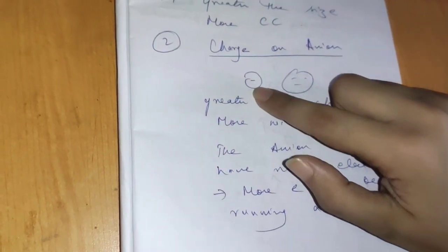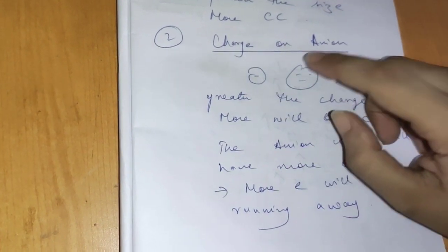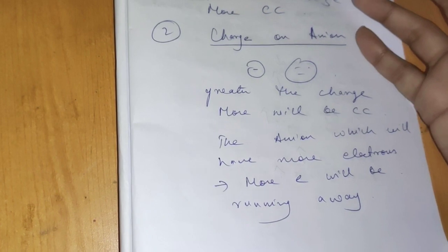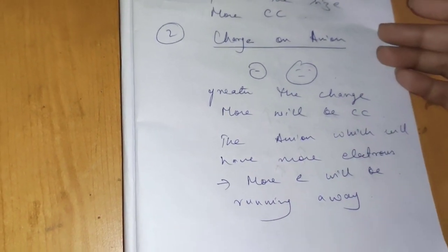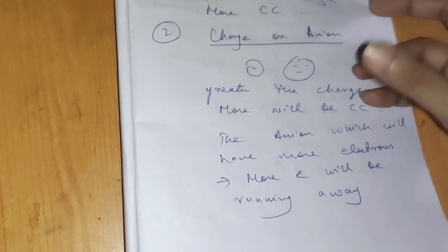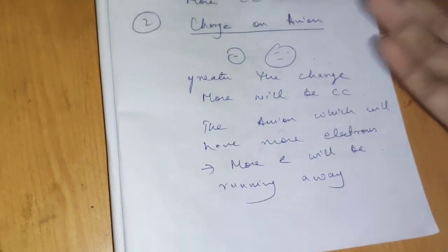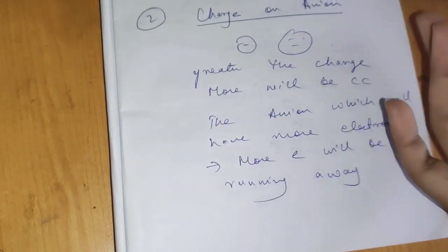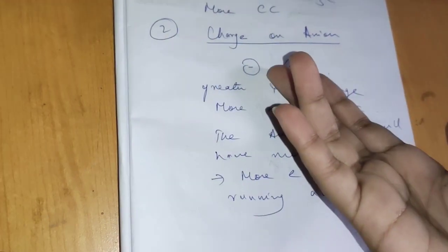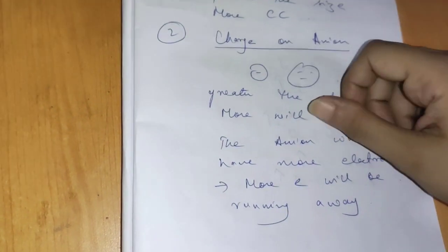Coming to the charge: if one anion has a charge of −1 and another has −3, greater the charge, more will be the covalent character. Obviously, if there are more electrons, they will be attracted more. The anion which has more electrons — more electrons will be running away — and hence more easily it will get polarized.